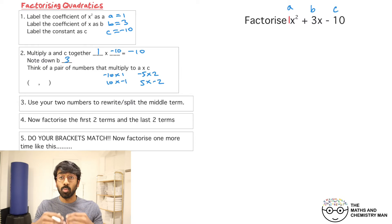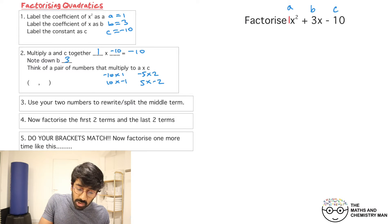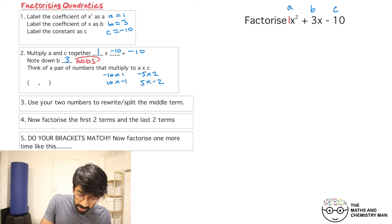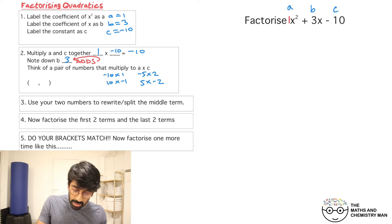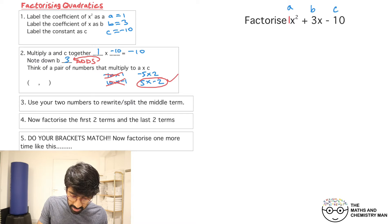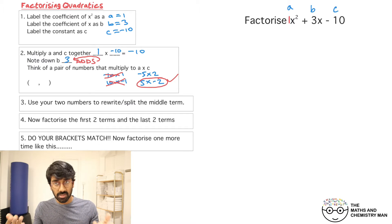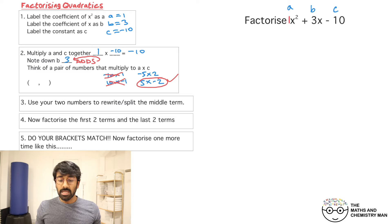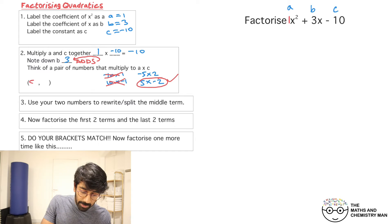Now we need to pick one of these pairs — but which one? You pick the one that adds to make b, so adds to make 3 in this question. That's not going to be the first, not the second — the one that adds to give you 3 is 5 and minus 2, because 5 take away 2 is 3. So I'm going to take these numbers and put them into my bracket.